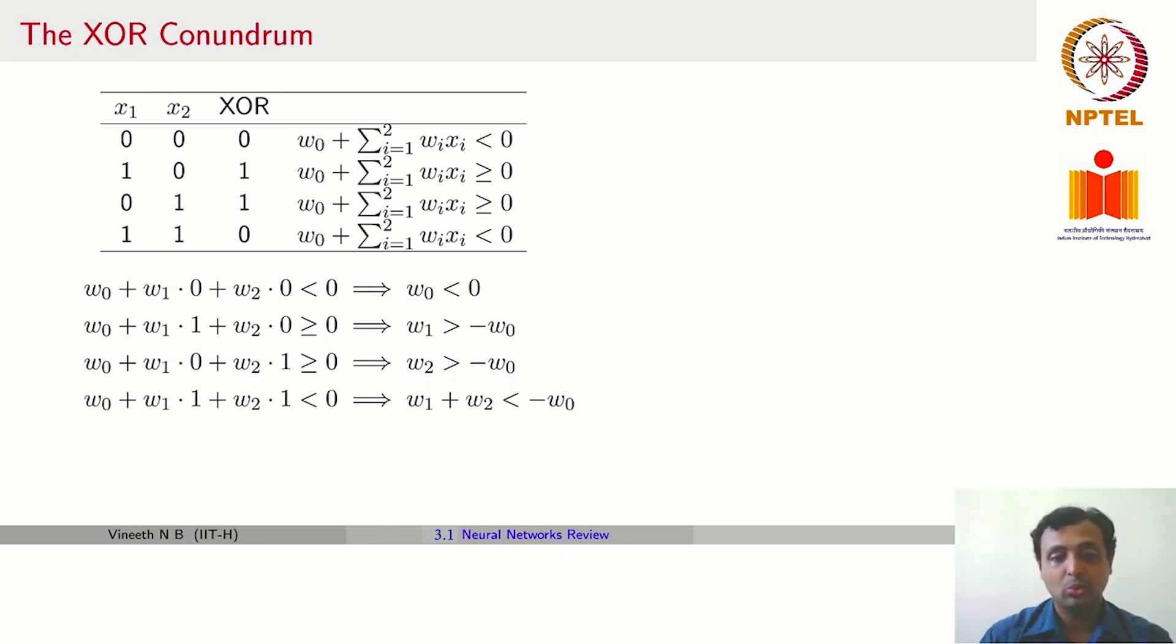The final line would show that W_naught plus W_1 plus W_2 should be less than 0, or W_1 plus W_2 must be less than minus W_naught. It is quite clear that because W_1 and W_2 are positive, W_1 plus W_2 cannot be less than minus W_naught. We can see a contradiction, which clearly shows why a perceptron cannot solve the XOR problem.